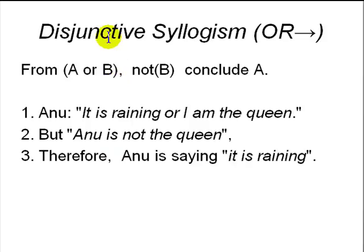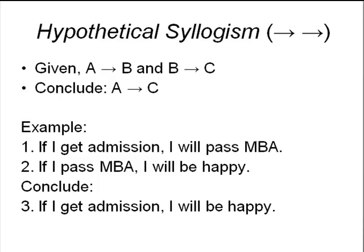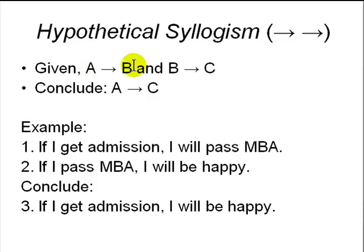That is known as disjunctive syllogism — 'disjunctive' means 'or' and 'syllogism' means implication. Hypothetical syllogism: given two rules, we can make a third rule. Given A implies B and B implies C, we can figure out that from A we can jump to conclude C.